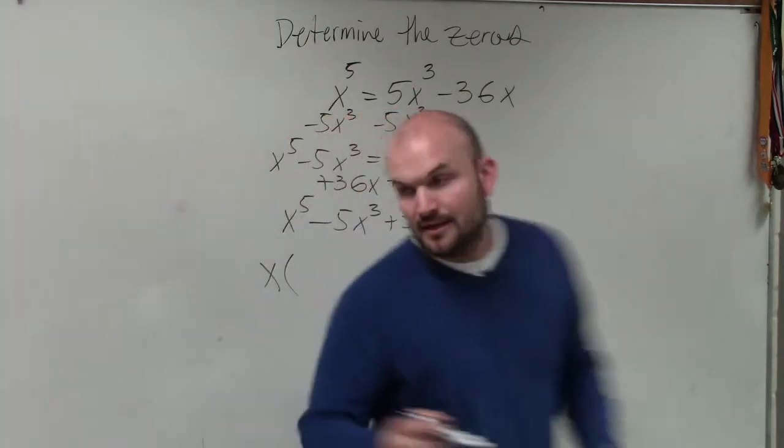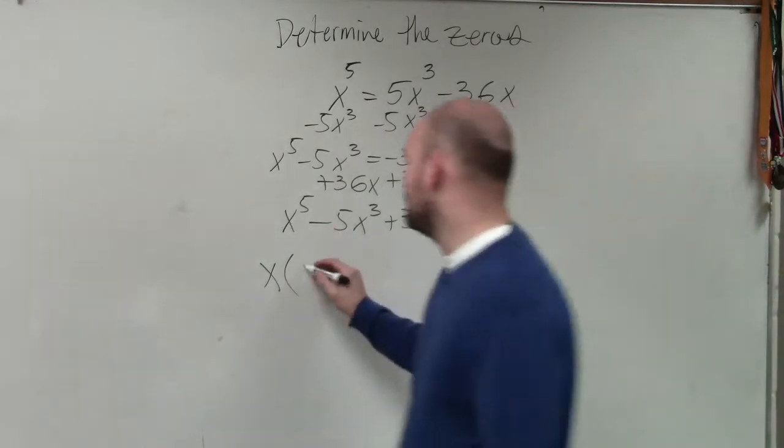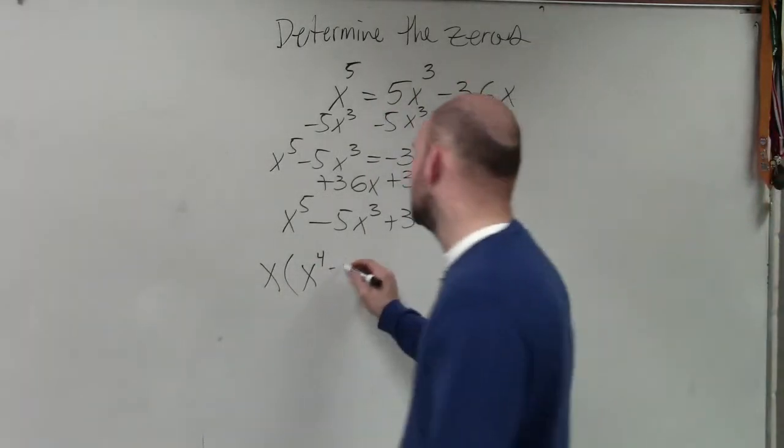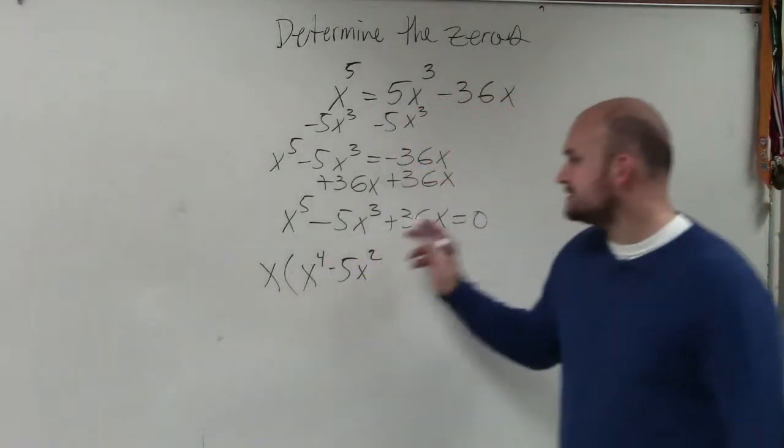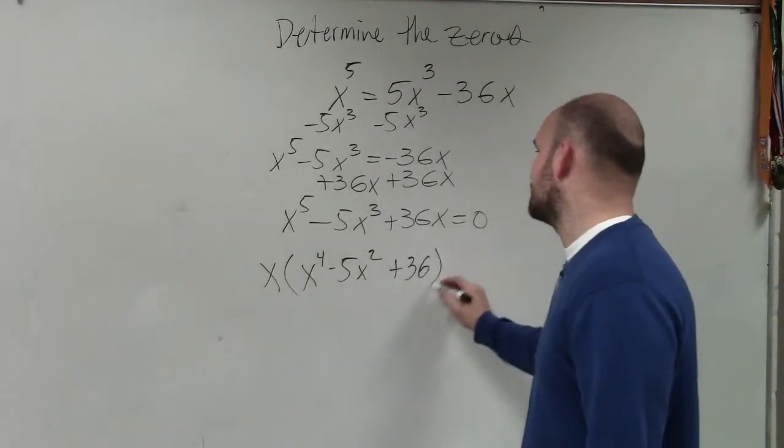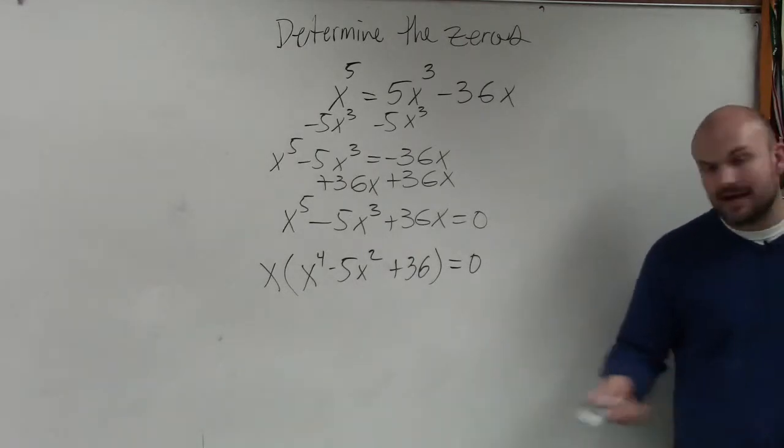If you guys factored out an x, x times what gives you x to the fifth? x to the fourth. x times what gives you negative 5x cubed? Negative 5x squared. And then x times what gives you 36x? Plus 36. So now, ladies and gentlemen, I have something factored.